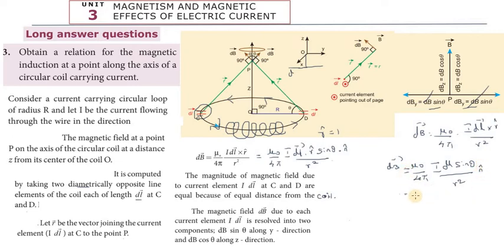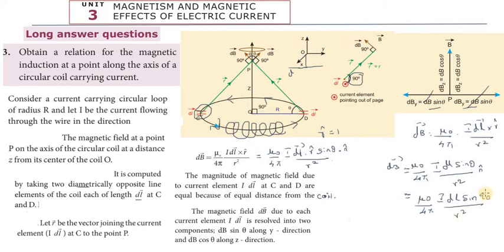Now consider the angle. The angle between the current element dL and the radius vector r is 90 degrees, so the theta value is 90°. sin 90° = 1. Therefore: dB = (μ₀/4π) × i × dL × sin 90° / r² = (μ₀/4π) × i × dL / r² × n̂. So the total dB vector equals this value: dB = (μ₀/4π) × (idL / r²).